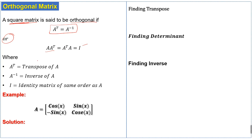Then the given matrix is an orthogonal matrix. Here, A^T indicates the transpose of matrix A, A^(-1) indicates the inverse of the matrix, and I indicates the identity matrix of the same order as the given matrix A.